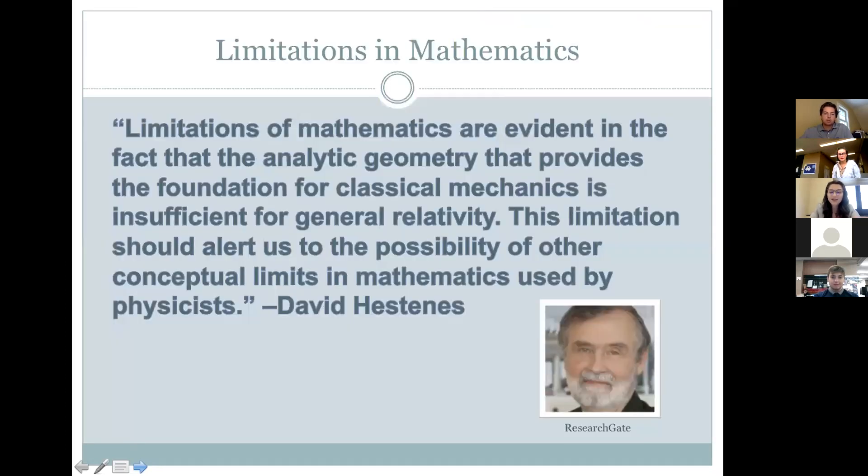While mathematics serves as a tool for extending our knowledge, it also serves to limit us as well. David Hestenes, who is best known for his work in geometric algebra and science education, says limitations of mathematics are evident in the fact that the analytic geometry that provides the foundation for classical mechanics is insufficient for general relativity. This limitation should alert us to the possibility of other conceptual limits in mathematics used by physicists. So to go further in physics, we probably need new math, like Einstein and Newton both recognized.